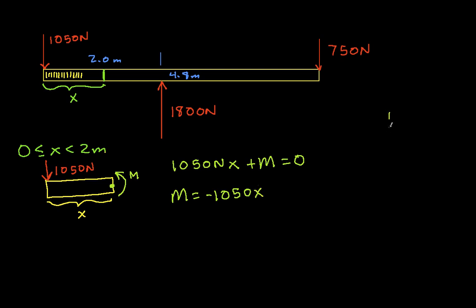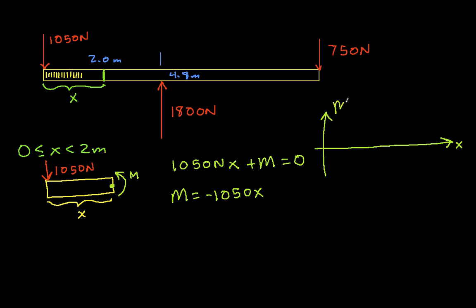M is drawn counterclockwise as well, so M is equal to minus 1050X. If we graph this as a function of X, we have that it starts off going like this till it gets to two meters. We now have the bending moment for distances between zero and two meters.